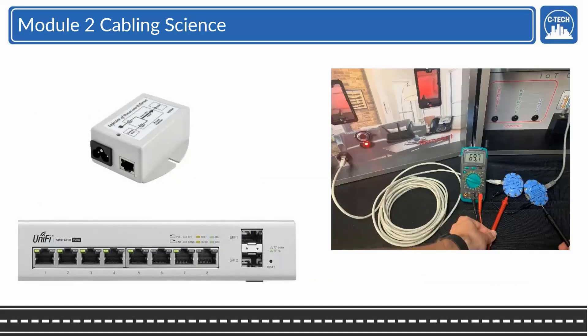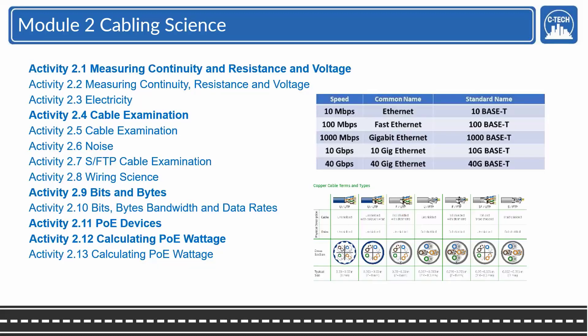We're going to cover the passive and active PoE systems. Passive always being on and the active actually requires a handshake to power remote devices. And the types - the higher the type, the more wattage up to a Type 4 that does 100 watts. And here's the activities in Module 2.